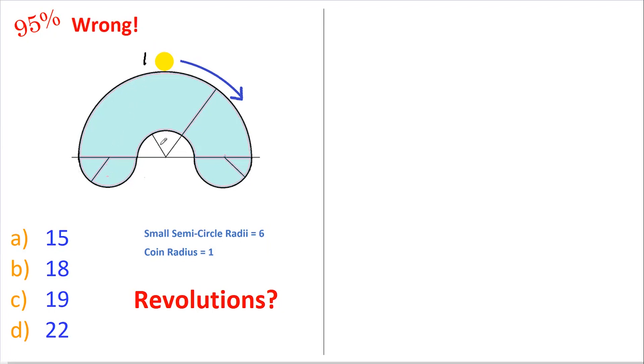Each of these three identical semicircles has a radius of six. This line here is also a semicircle. A really easy question, I hear you say, but I guarantee you 95% of you will get this wrong.